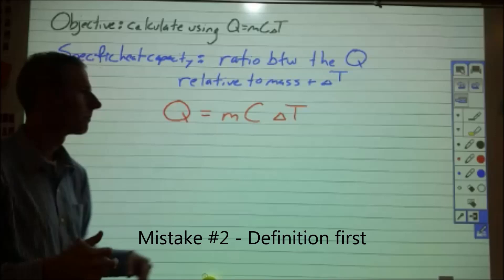Mistake number two is using the definition here first. This definition has multiple concepts in it that are too complicated for a novice student to understand as they're learning, such as temperature and heat. We're also doing mathematical concepts with those like ratios, which makes this too early for the student to piece together — so instead they're just going to learn it as a particular phrase.